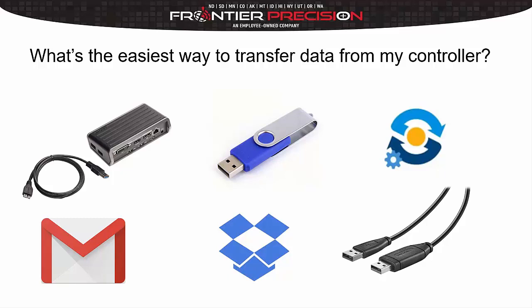Bottom left is a Gmail account. You can set up an email account on your TSC7 so that out in the field you can save, say, a CSV file and just email it to yourself. When you get back into the office, open up your email and your CSV file is right there — then do your drag and drop or save it to whatever file location you'd like.